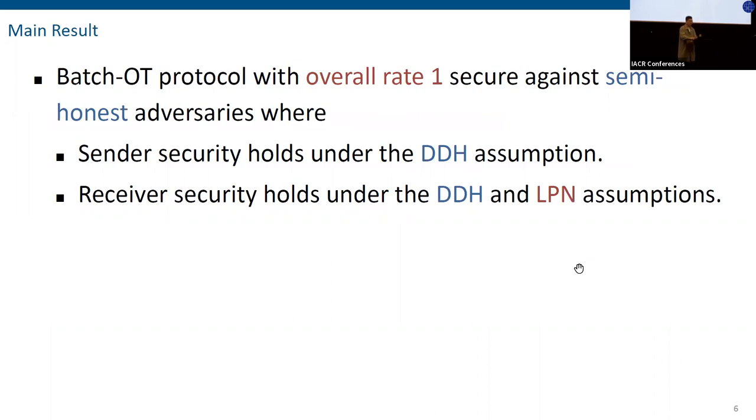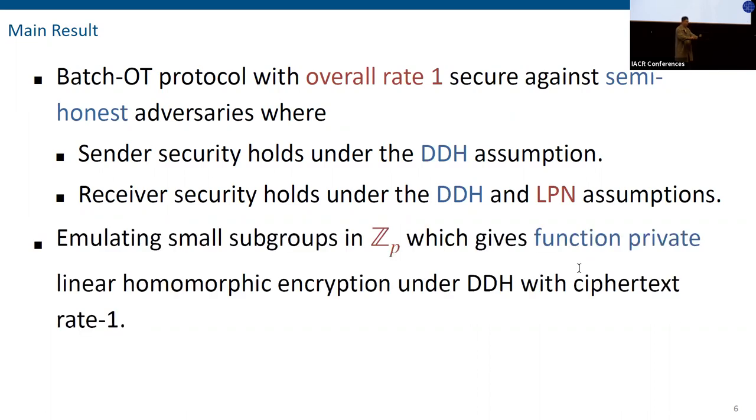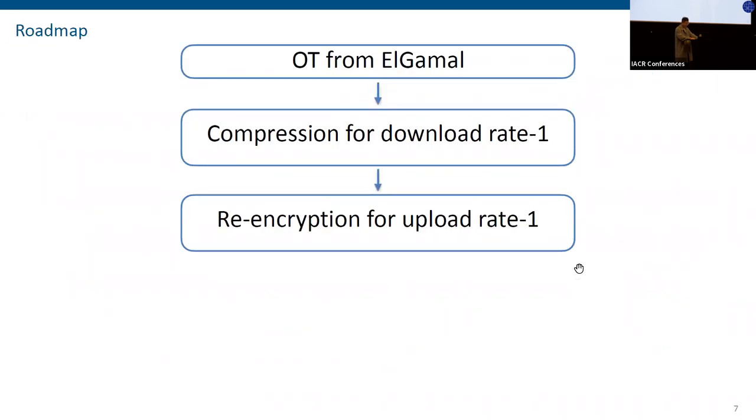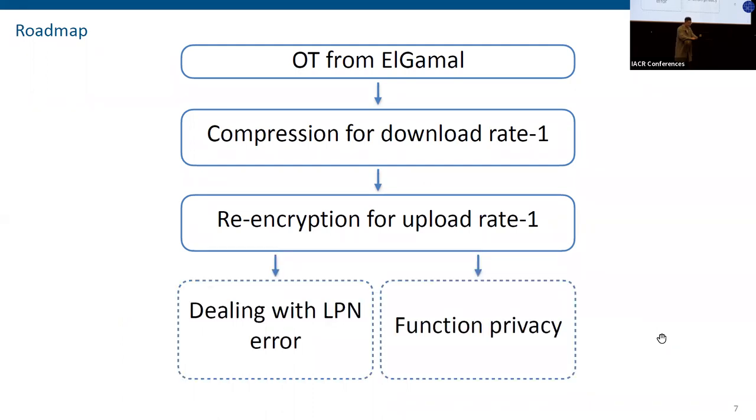We tend to ask, can we build a rate-1 Batch-OT with assumptions not implying FHE or weaker lattice assumptions? The answer leads to our main result. We are able to build a Batch-OT protocol with rate 1, which is secure against semi-honest adversaries. We need DDH assumption to argue sender security, and we need DDH plus LPN assumptions to argue receiver security. As an additional result, we show how to emulate a small subgroup in ZP, which gives us the first statistically function-private linear homomorphic encryption under DDH with rate-1 ciphertext. Here's a roadmap of this talk. I will first show you how to build a standard OT from Elgamal encryption schemes. Then I show how to achieve download rate 1 via standard ciphertext compression. Next, I will show how to achieve upload rate 1 via re-encryption technique. At the end, I will briefly describe how to tackle two small issues appearing in the last step.